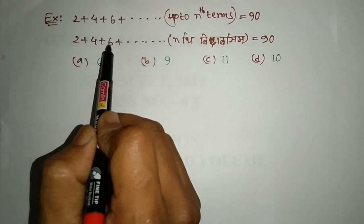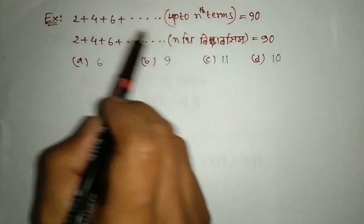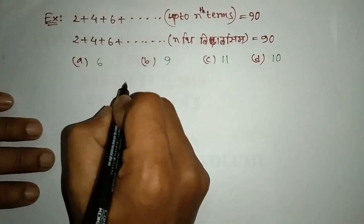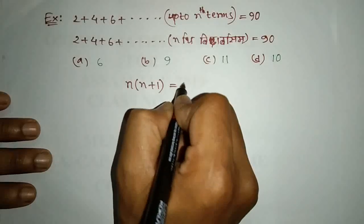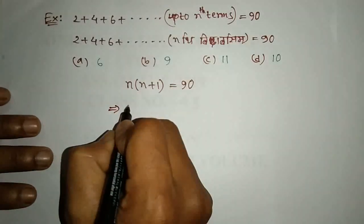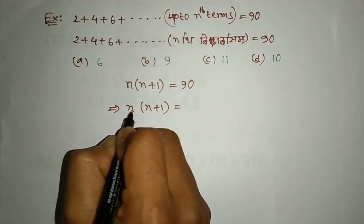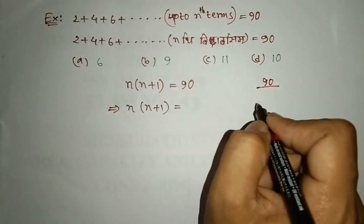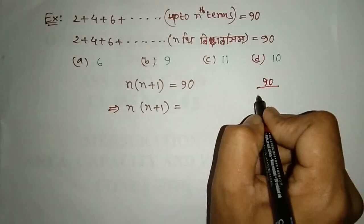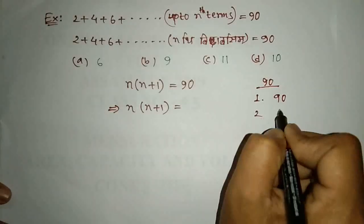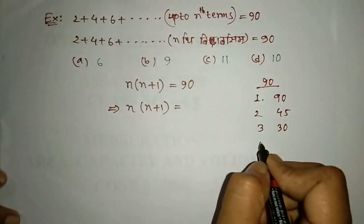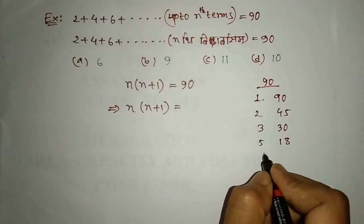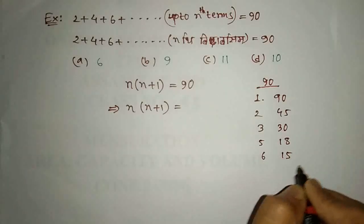Next, we will have 2 plus 4 plus 6 plus dot dot dot. We will have 90. 90 is equal to n into n plus 1. 90 is equal to N equals 2. One is equal to 90. Two is equal to 45. Three is equal to 40. The number 4 is equal to 5. 5 is equal to 25. 14 is equal to 6, 6 is equal to 6, 15 is equal to 9.